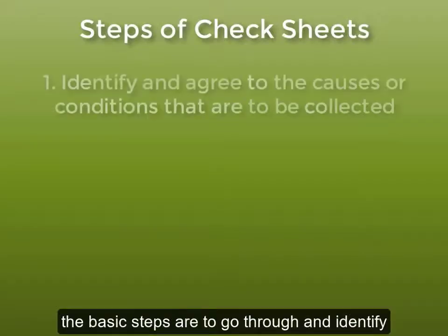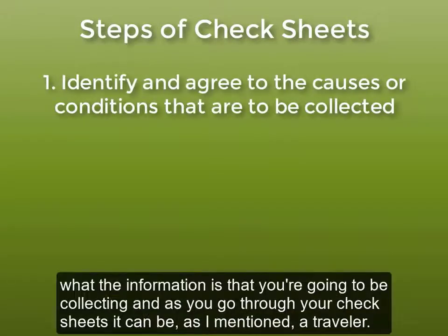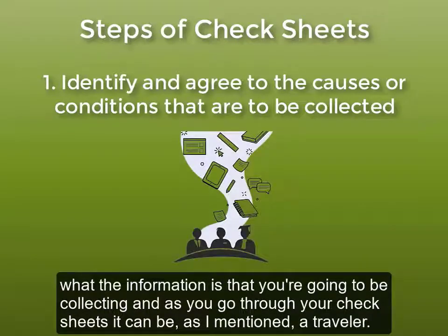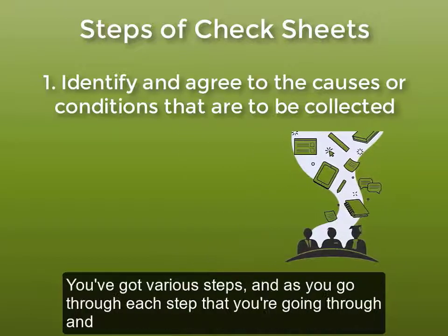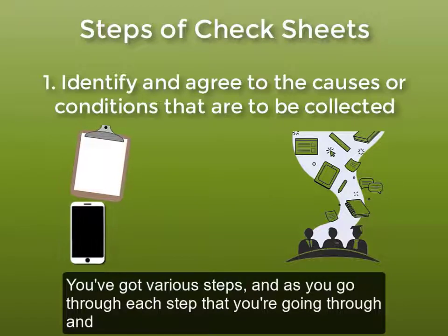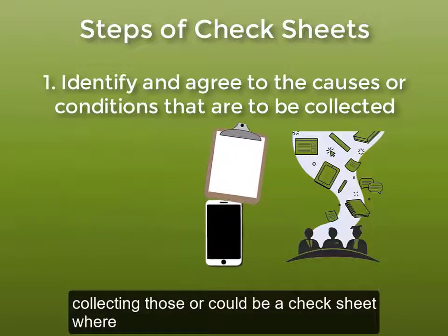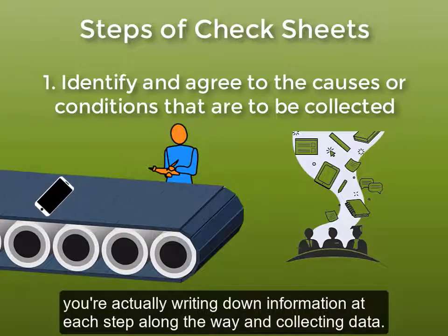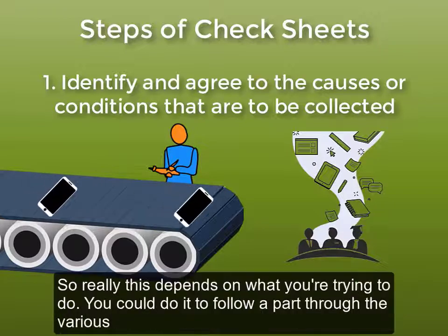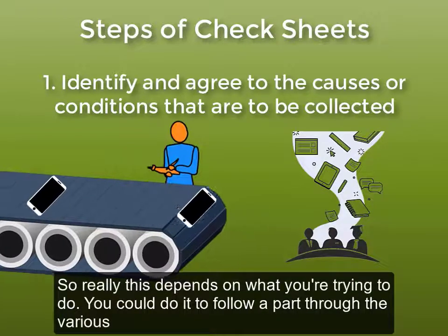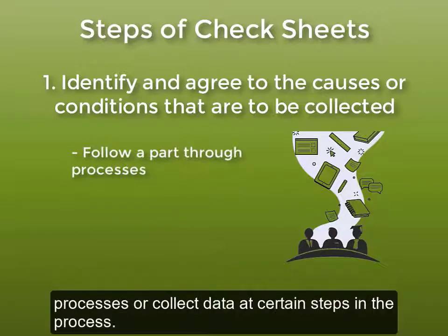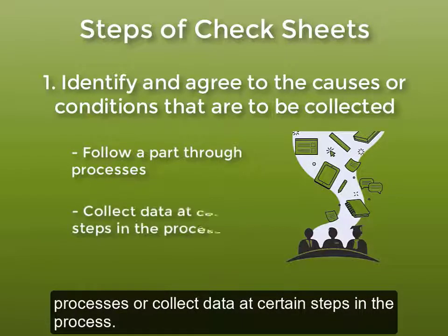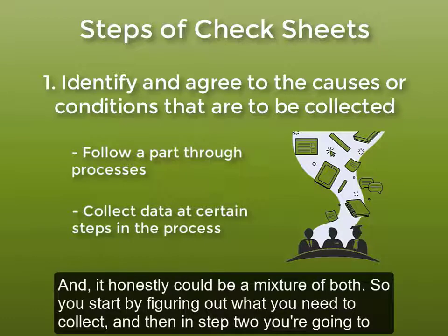With our check sheets, the basic steps are to go through and identify what information you're going to be collecting. It could be a traveler, so you've got various steps and as you go through each step you collect those. Or it could be a check sheet where you're actually writing down information at each step along the way and collecting data. You could do it to follow a part through diverse processes or collect data at certain steps in the process — honestly it could be a mixture of both.